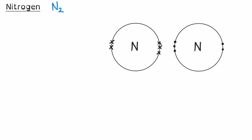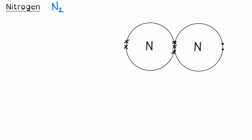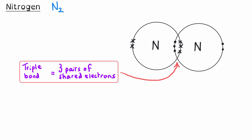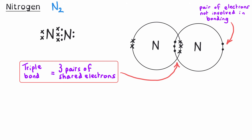Nitrogen is in group five of the periodic table, giving it five electrons in its outer shell. Since that shell can hold eight, the nitrogen atoms need to share three electrons each. When those electron shells overlap, there are six electrons in the shared zone. Each nitrogen atom has six shared electrons plus two of its own kept out of the bond, giving eight electrons in total. This means we have three pairs of shared electrons — a triple bond.